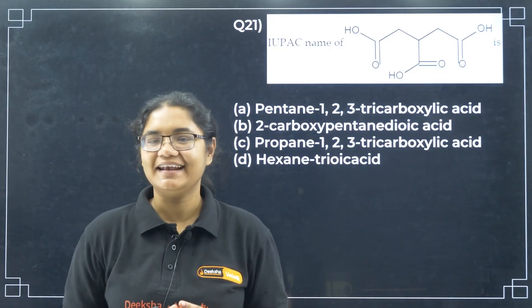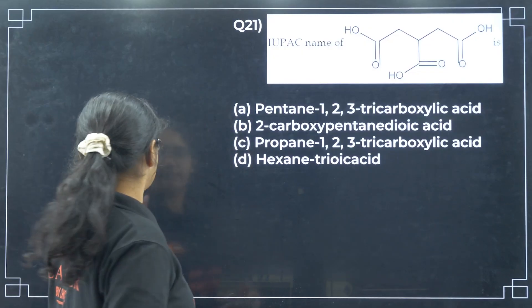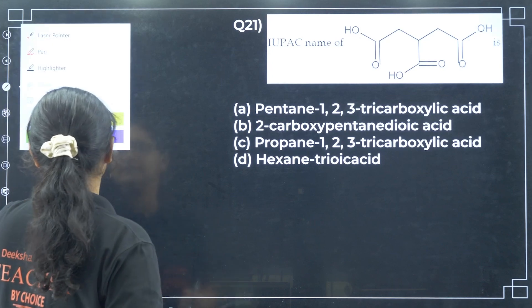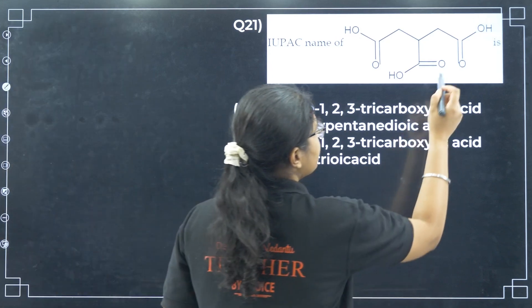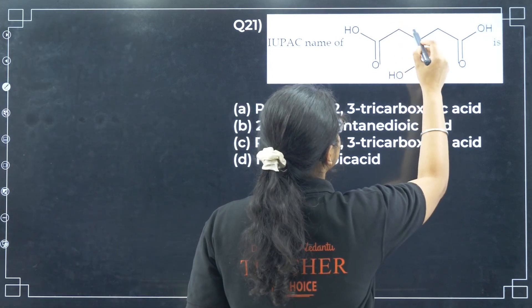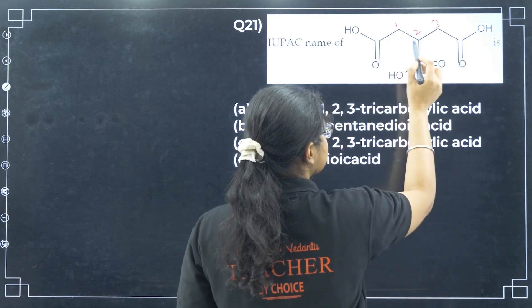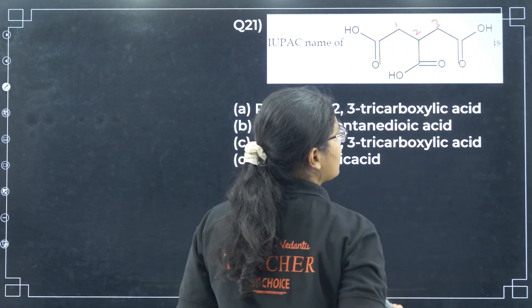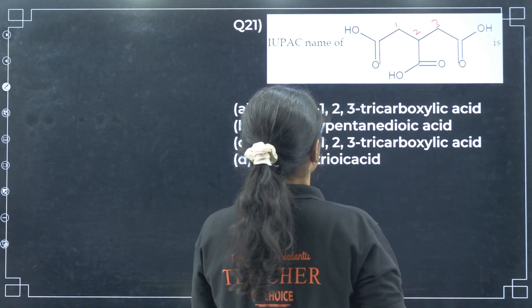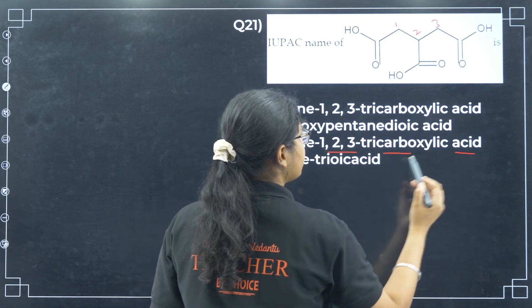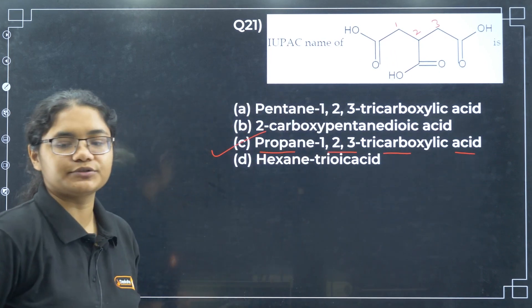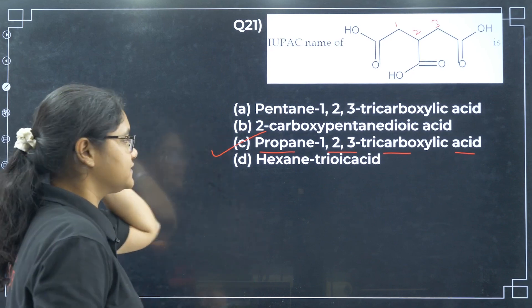Next, the IUPAC name of the given compound. If I want to number it, I can have first, second and third. I have a substituent on first carbon, second carbon and third carbon. So I can name it as propane-1,2,3-tricarboxylic acid. Option C. I hope this is clear.